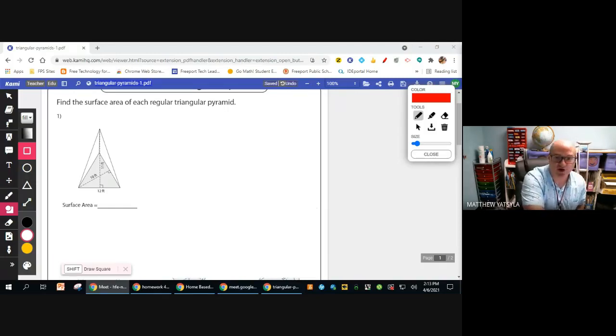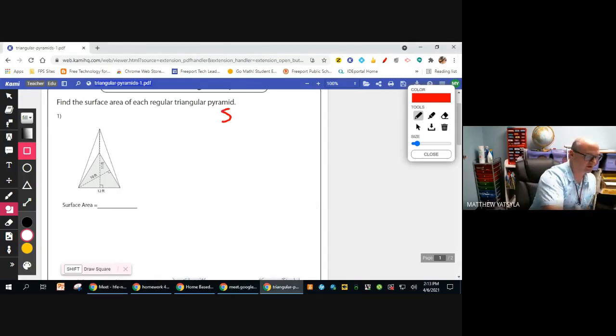Okay, so this will be for a triangular pyramid. We're going to find the surface area today. So again, we're going to remind you of the formula. Surface area equals the base plus one-half times the perimeter of the base times that slant height.